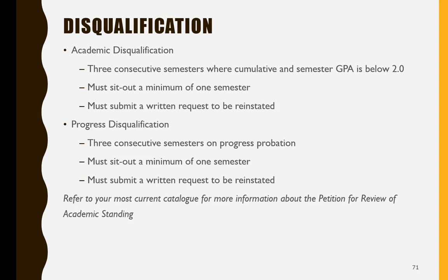Let's talk about academic disqualification first. A student is placed on academic disqualification after being on probation three consecutive semesters, where their semester and cumulative grade point average is below 2.0. If a student finds themselves in this situation, the student will be required to sit out a minimum of one semester. After sitting out, the student will need to submit a written request to be reinstated in order to begin taking classes again.